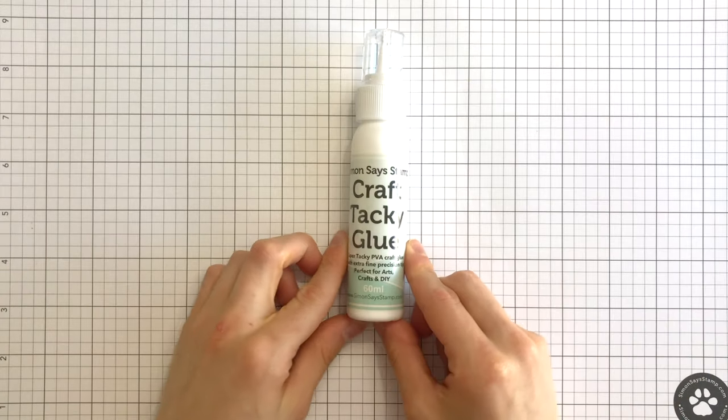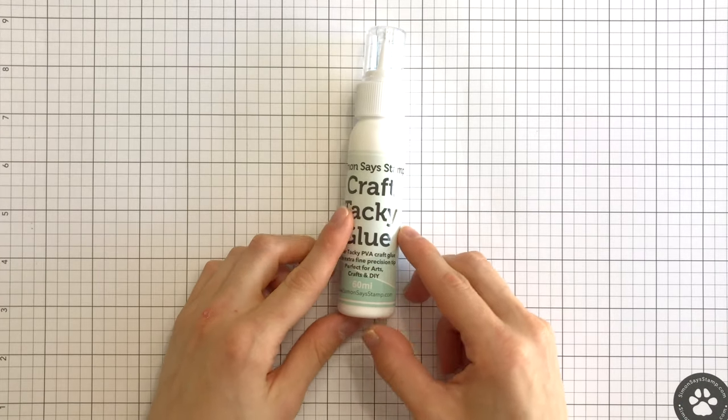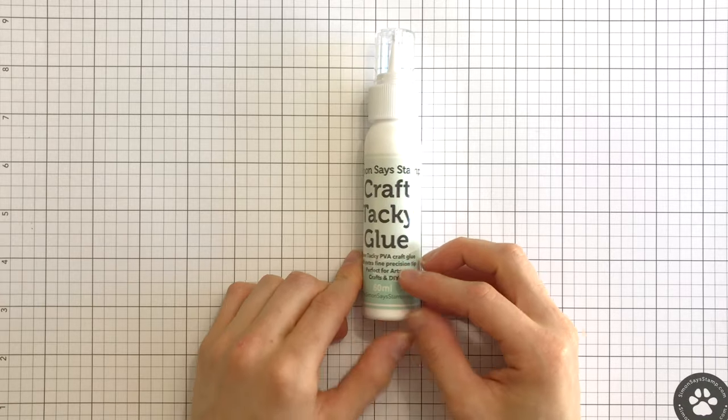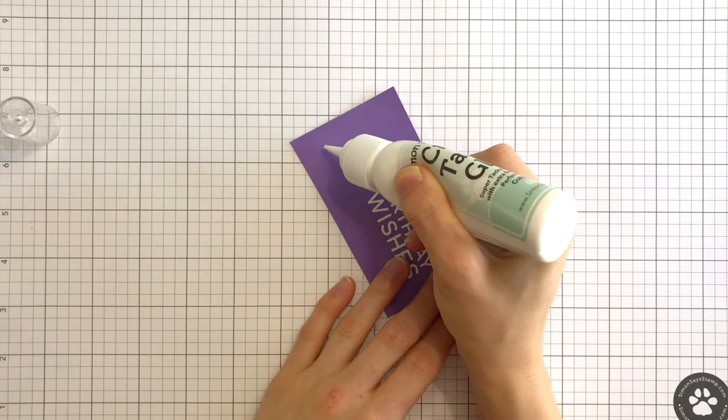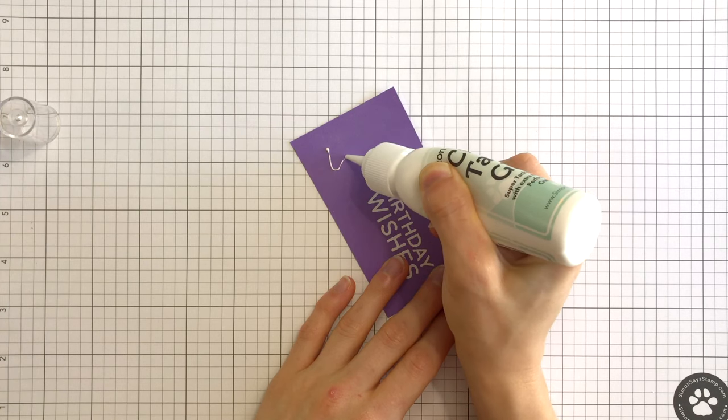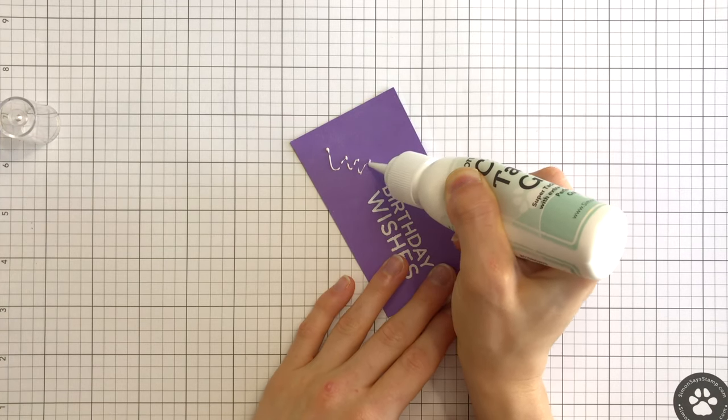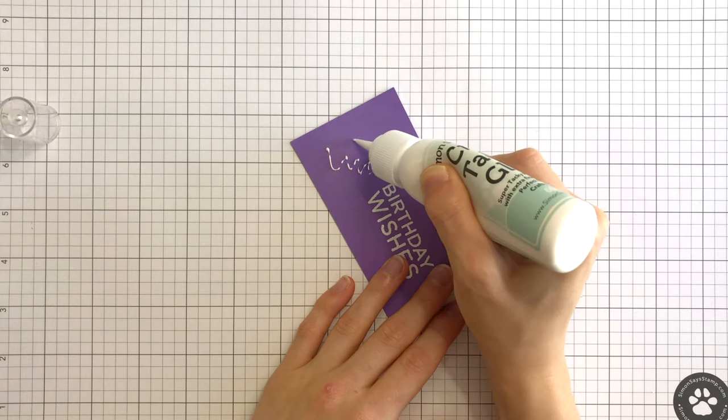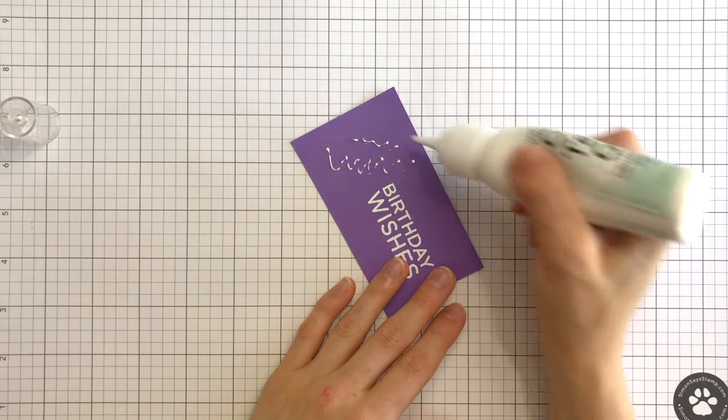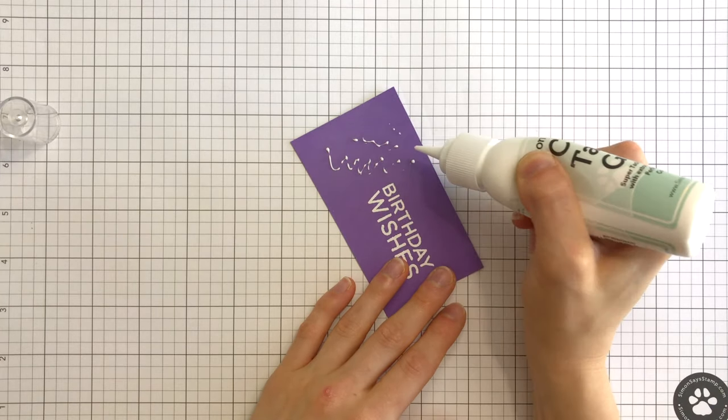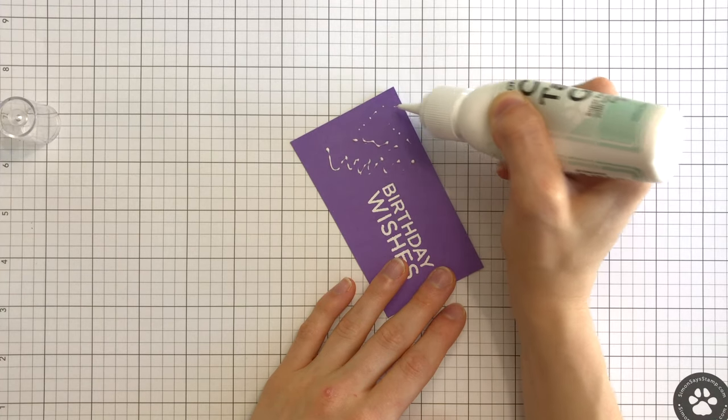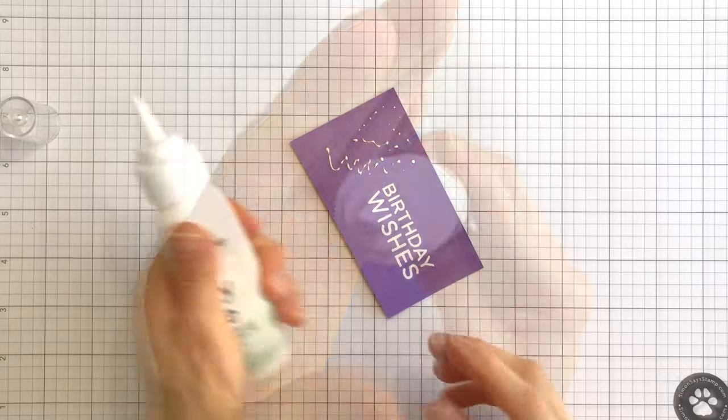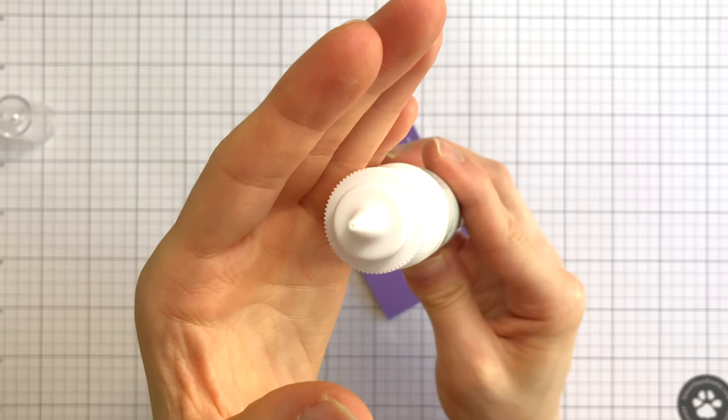Let's talk about glue. For a go-to adhesive, you want something that holds strong, dries quickly, and works on a variety of surfaces. Our Simon-exclusive Craft Tacky Glue is a liquid adhesive that does all these things, making it a must-have for adhering anything from die cuts to full card panels, fabric, embellishments, and even sequins. The tip is quite fine, which means you can even use this adhesive for intricate die cuts, too.